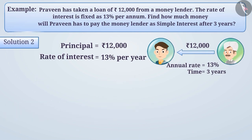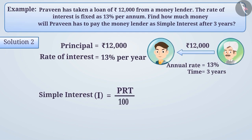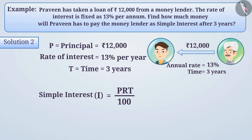Solution 2. We can also solve this example with the help of a formula. The formula to calculate simple interest is I = PRT/100. Here, P is equal to the principal, which is Rs 12,000. T is time, which is 3 years. R is the rate of interest, which is equal to 13% per year.